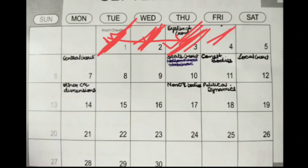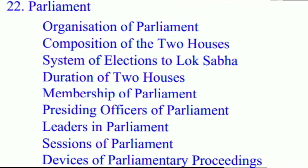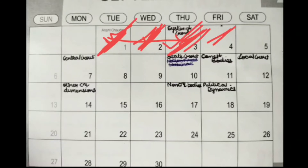Day four you can completely keep for Parliament, because Parliament is a 48-page chapter. Once you've studied a 40-page chapter, you won't be willing to do much more alongside it. So on day four, you are done with Parliament.